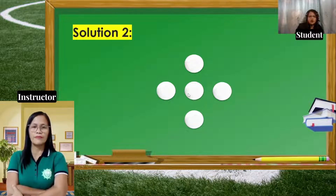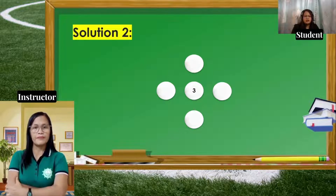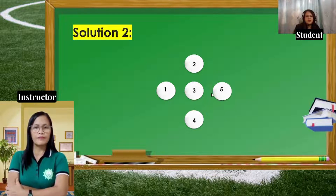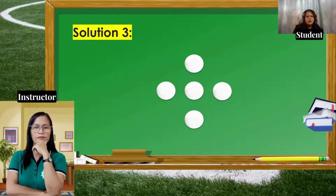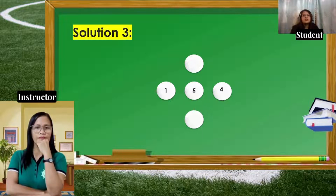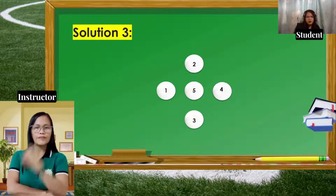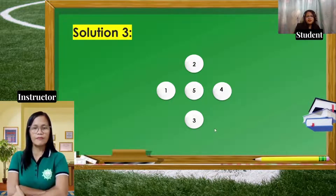Another solution: put 3 at the center, with 1 and 5 across and 2 and 4 vertically. Then 1+3+5=9 and 2+3+4=9 also — same sum of 9. Another solution: put 5 at the center, with 1 and 4 across and 2 and 3 vertically. Then 1+5+4=10 and 2+5+3=10 also. So this is another solution to the problem.